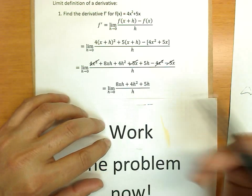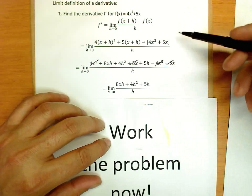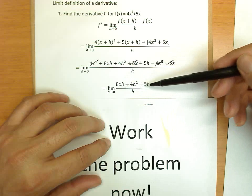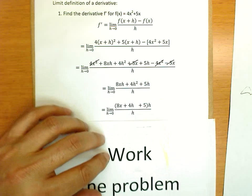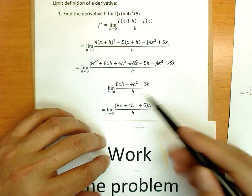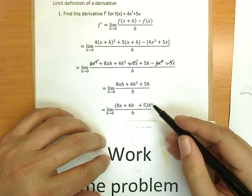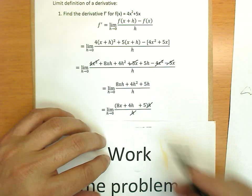And now we notice, and this will always check to make sure you haven't made any algebra mistakes, is that an h will factor out of the top. And when that h factors out, we're left with (8x + 4h + 5) / h. And then, of course, we can cancel those two h's.